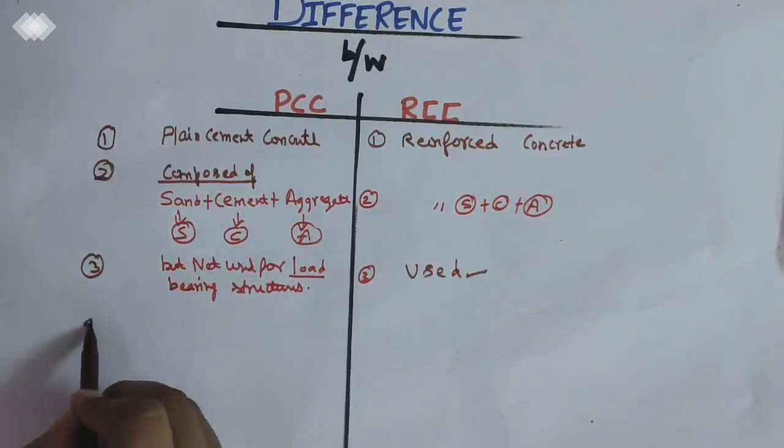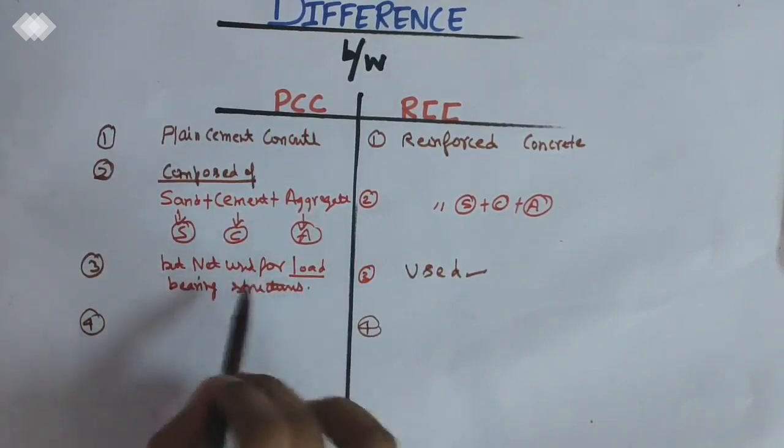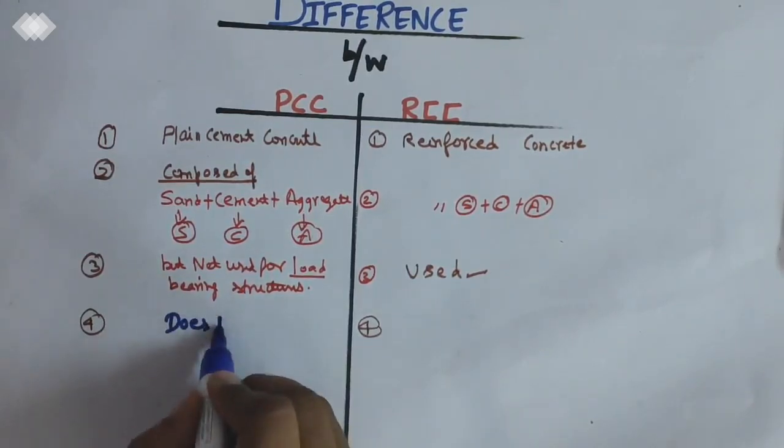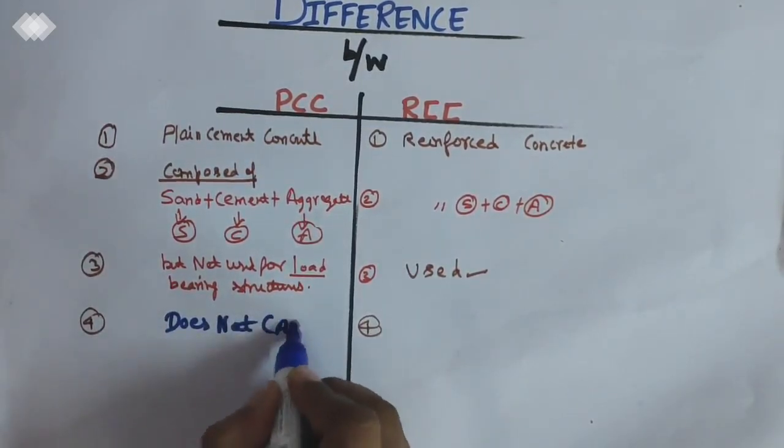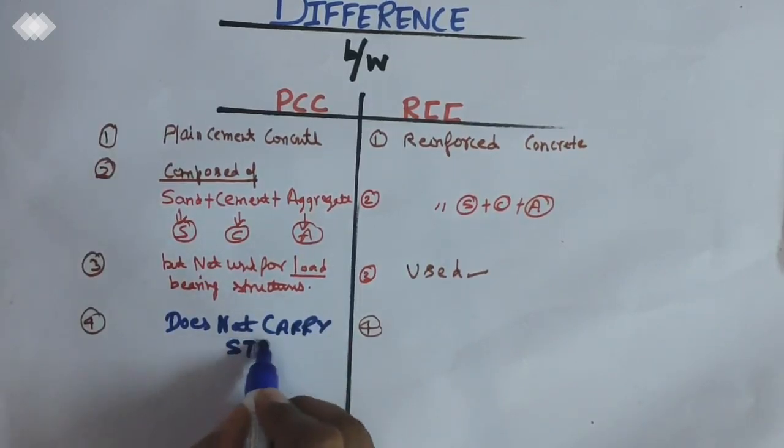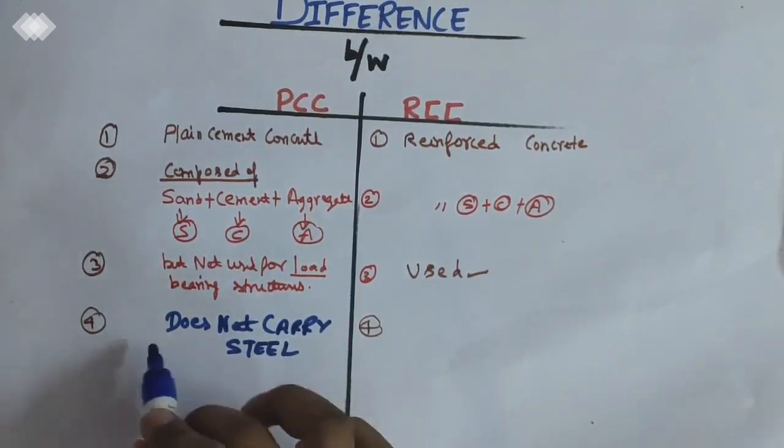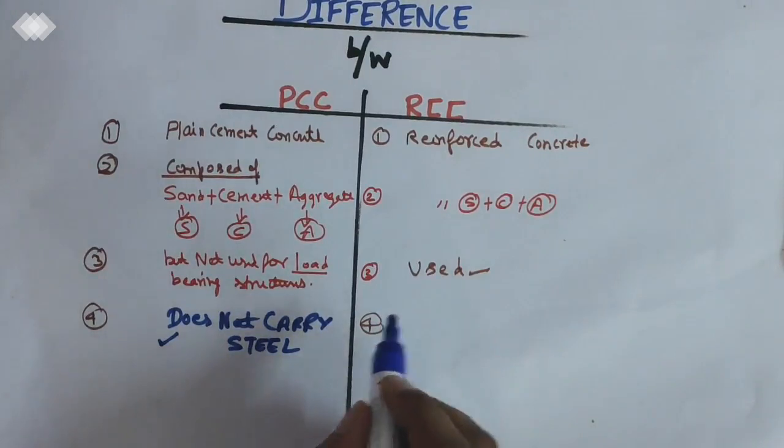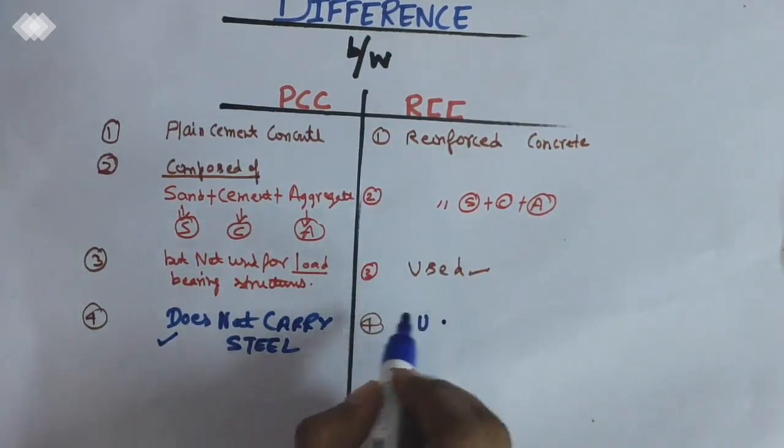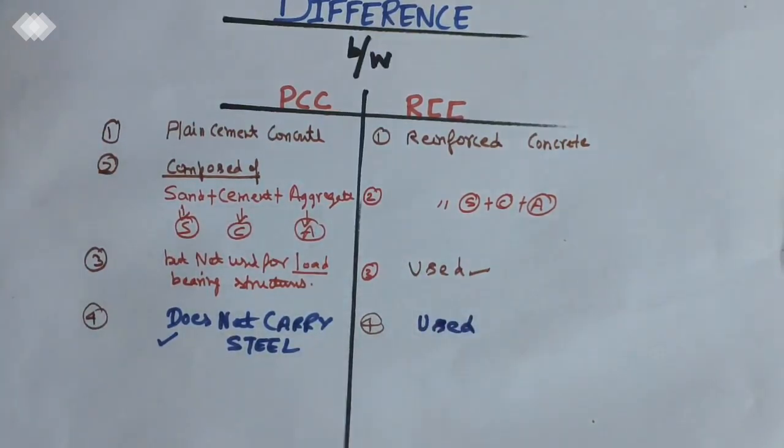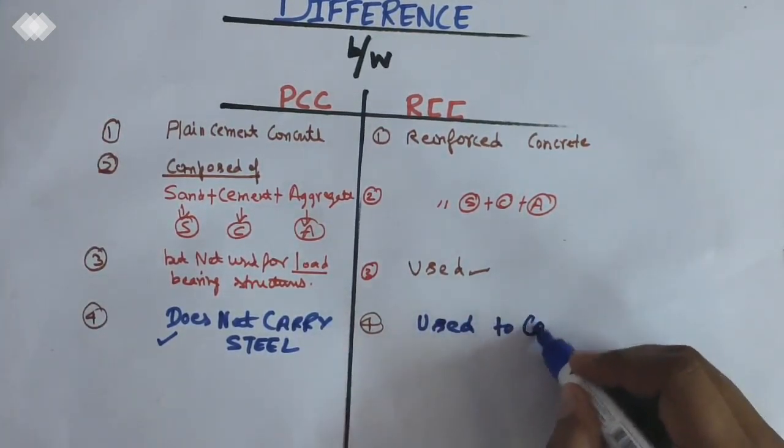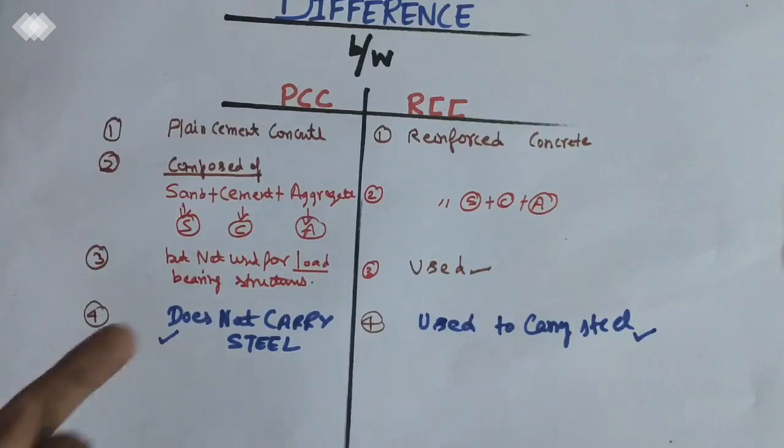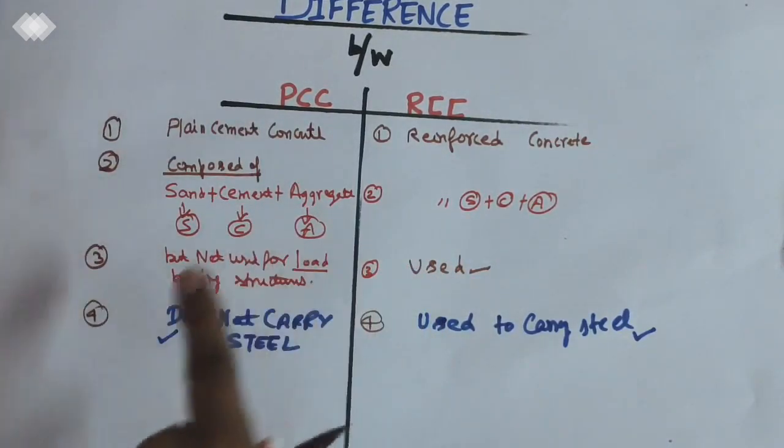The fourth point: PCC does not carry steel. It does not carry steel. That's why it is not used for load bearing structures. While RCC is used to carry steel.